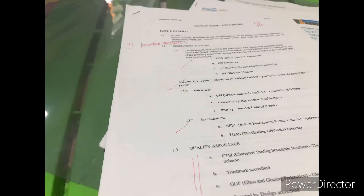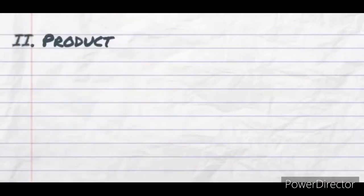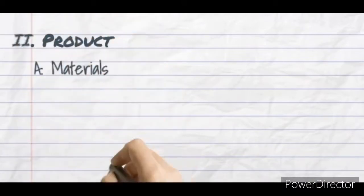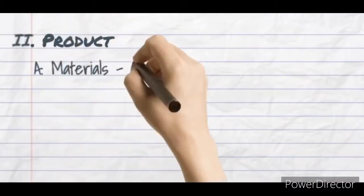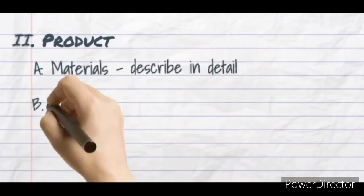In the previous video we discussed the subsections under the general section. Now let's move on to the next section: the product. The first subsection in this part is materials — this is where you describe the item in detail.